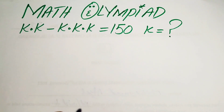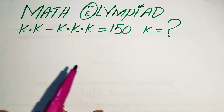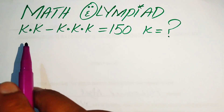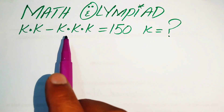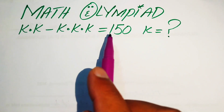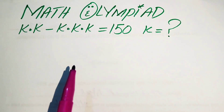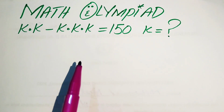Hello everyone, welcome. We solve this Math Olympiad algebra problem: k times k minus k times k times k equals 150, and we solve for the values of k.